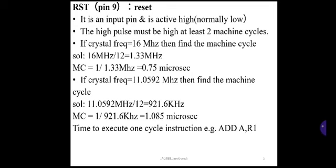If the crystal frequency is 16 MHz, find the machine cycle. 16 MHz divided by 12 equals 1.33 MHz. Machine cycle equals 1 divided by 1.33 MHz, which equals 0.75 microseconds.